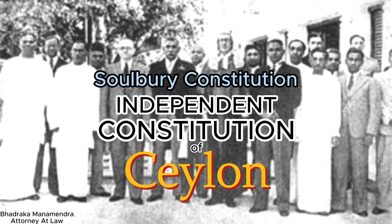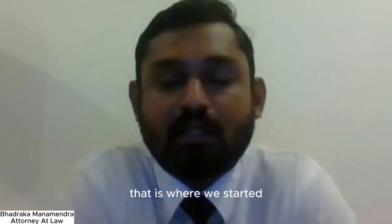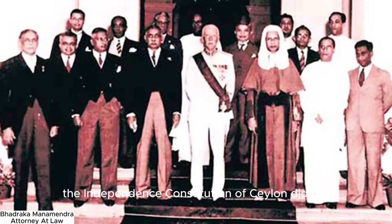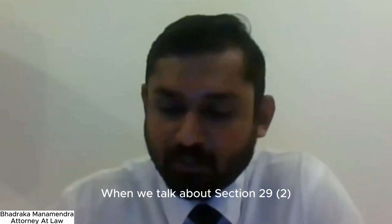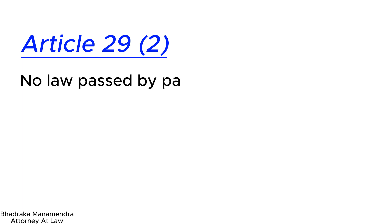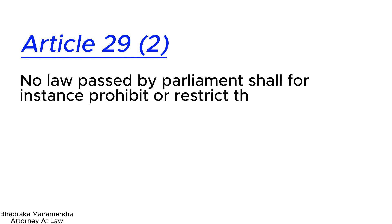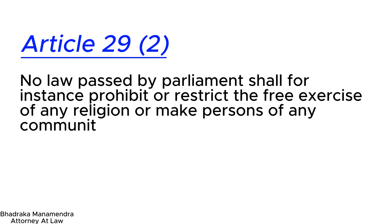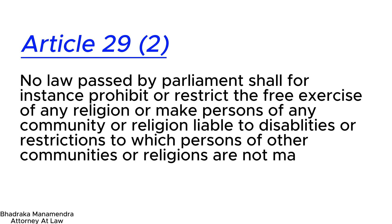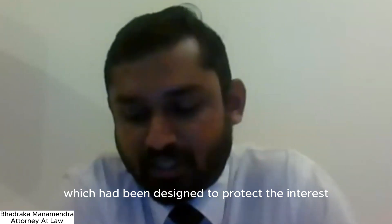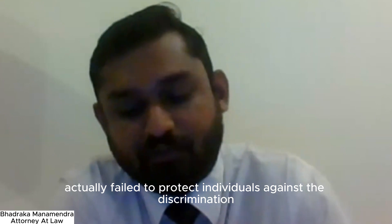The Independence Constitution of Ceylon did not actually embody a Bill of Fundamental Rights, but the nearest it came to one was through Section 29 of that Constitution. Section 29 provided that no law passed by Parliament shall prohibit or restrict the free exercise of any religion, or make persons of any community or religion liable to disabilities or restrictions to which persons of other communities or religions are not made liable. This section, which had been designed to protect the interests of minority communities, actually failed to protect individuals against discrimination.